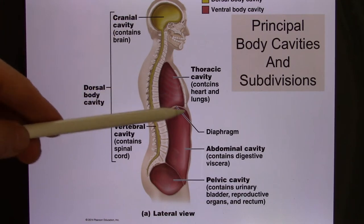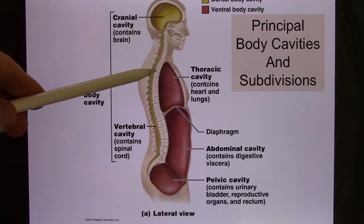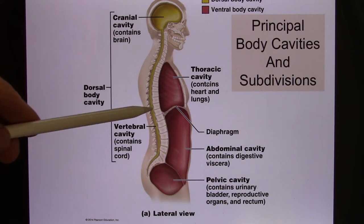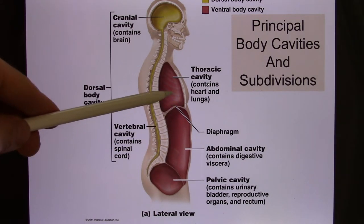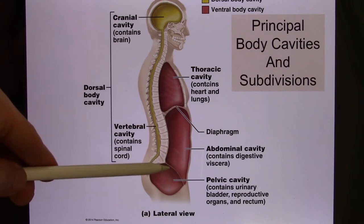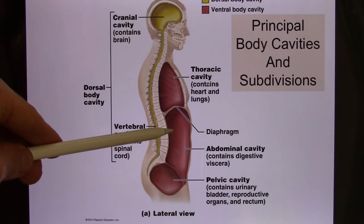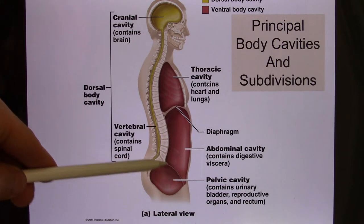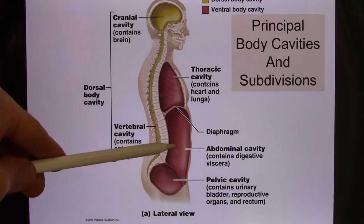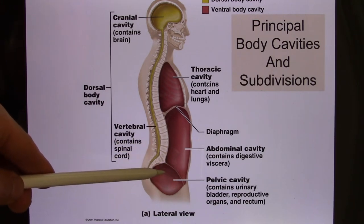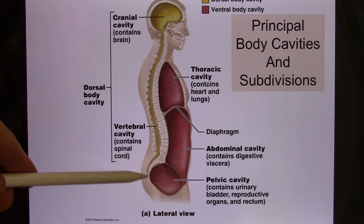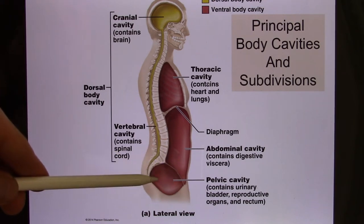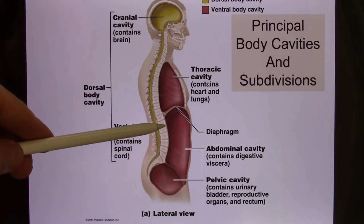The ventral part can be divided into the thoracic, abdominal, and pelvic. They are divided by the diaphragm. The abdominal pelvic can be divided into the abdominal and pelvic cavity. There is no physical separation between the abdominal and pelvic, so you have to look at the pelvic bone. This very low area is the pelvic cavity; all the others are abdominal.